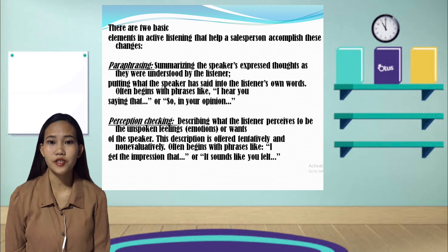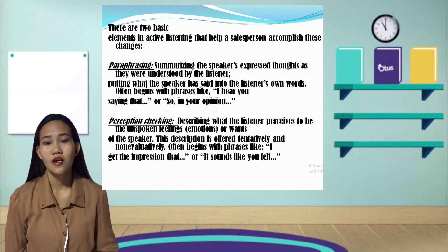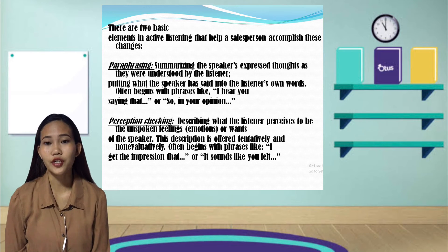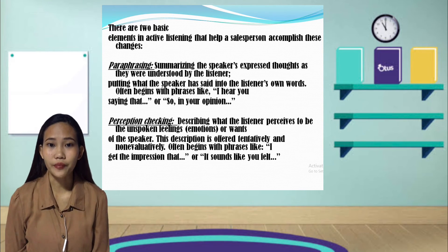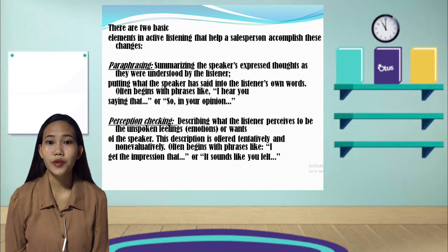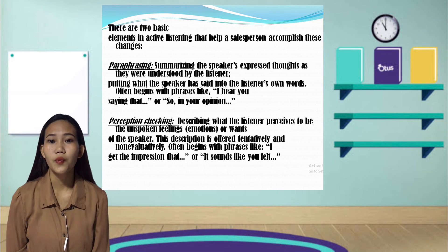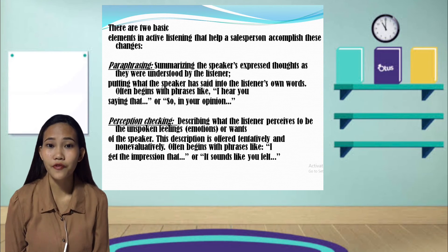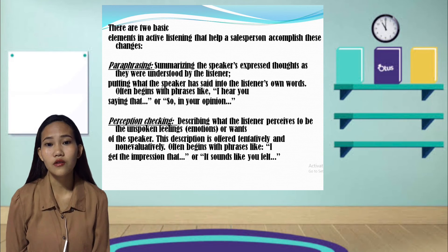Paraphrasing and perception checking help the salesperson fully comprehend what the buyer is trying to say. They provide the sales associate with new information or confirm information developed during the sales process preparation. Paraphrasing is a good litmus test for a salesperson — when the listener repeats the speaker's words in his or her own dialect, the speaker can confirm or correct the information. Perception checking enables the listener to go beyond the words being spoken and recognize what the speaker is feeling, since the speaker may be reluctant to express or unable to put those feelings into words. When both stakeholders in a conversation actively listen, they provide feedback to each other, improving communication.